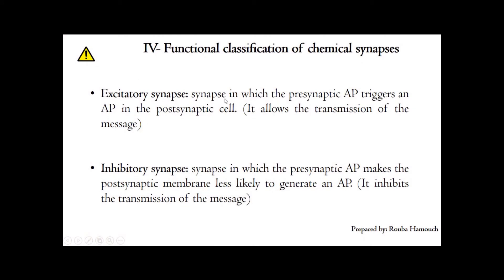Concerning their functions: the excitatory synapse is the synapse in which the pre-synaptic action potential triggers an action potential in the post-synaptic cell, allowing the transmission of the nervous message. The inhibitory synapse is the synapse in which the pre-synaptic action potential makes the post-synaptic membrane less likely to generate an action potential, thereby inhibiting the transmission of the message. The functioning of excitatory and inhibitory synapses will be explained in the next videos.